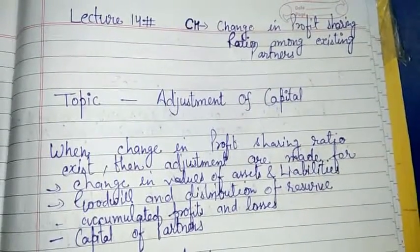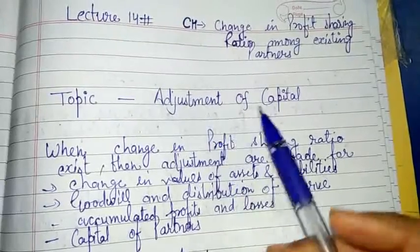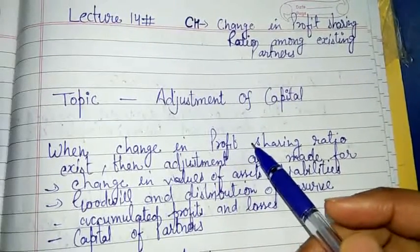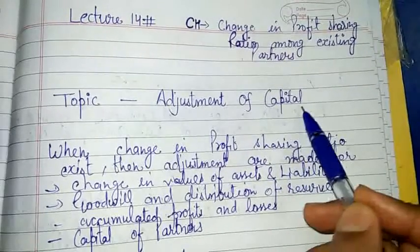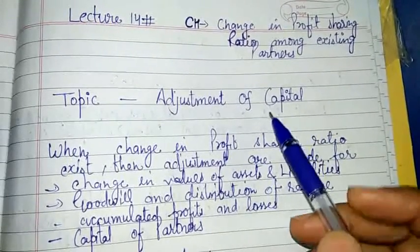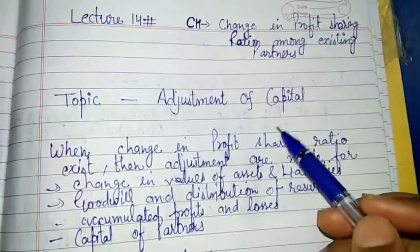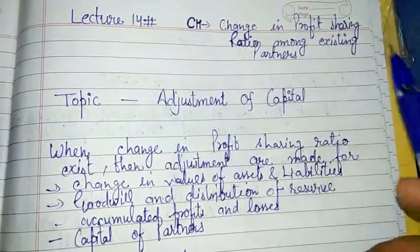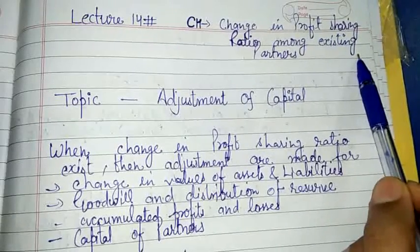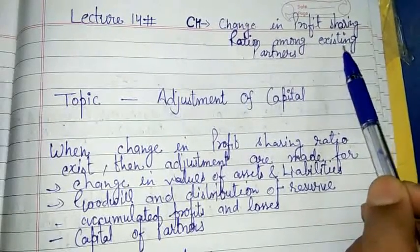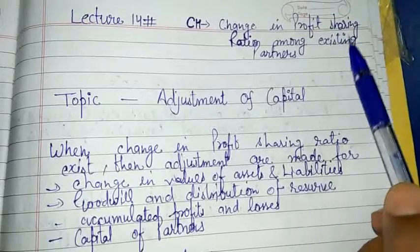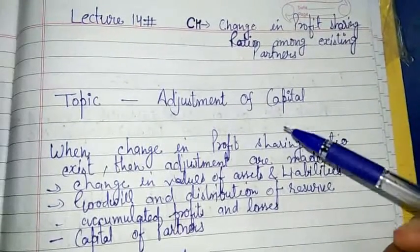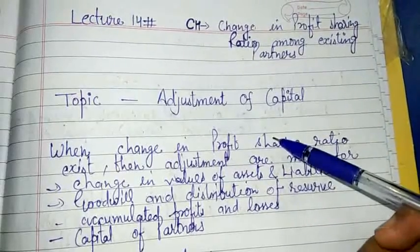So what is Adjustment of Capital? Just like adjustment of goodwill and adjustment of reserves and surplus, we have to adjust capital as well. When partners in a partnership firm decide to change the profit sharing ratio, adjustments of goodwill and revaluation of assets and liabilities are used.